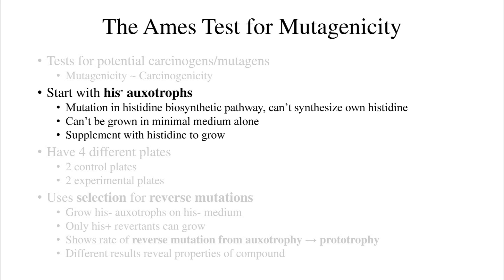The bacteria you plate are histidine-minus auxotrophs. This means they have a mutation in the biosynthetic pathway for making their own histidine, so they cannot grow on minimal medium unless it is supplemented with histidine. Remember, auxotrophs have a forward mutation. Prototrophs are wild type and can synthesize all of their essential amino acids, so they can grow on minimal medium.